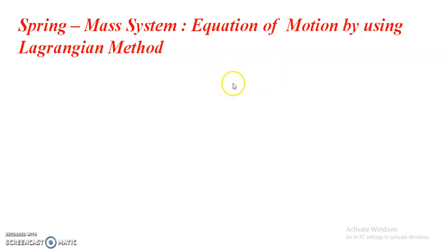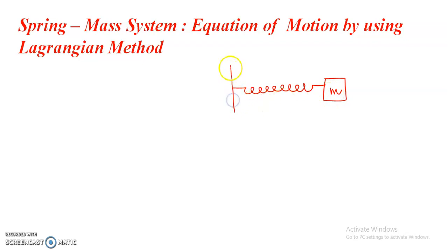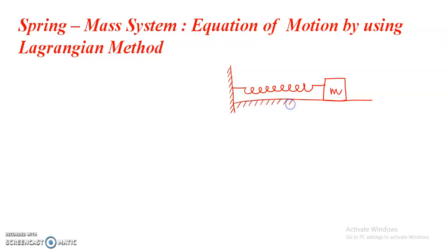We are going to consider the ideal situation. In this case, a massless spring is connected to a mass M, with the other end connected to a rigid support. Also, for the ideal case, we are going to consider that the mass moves over a frictionless surface.